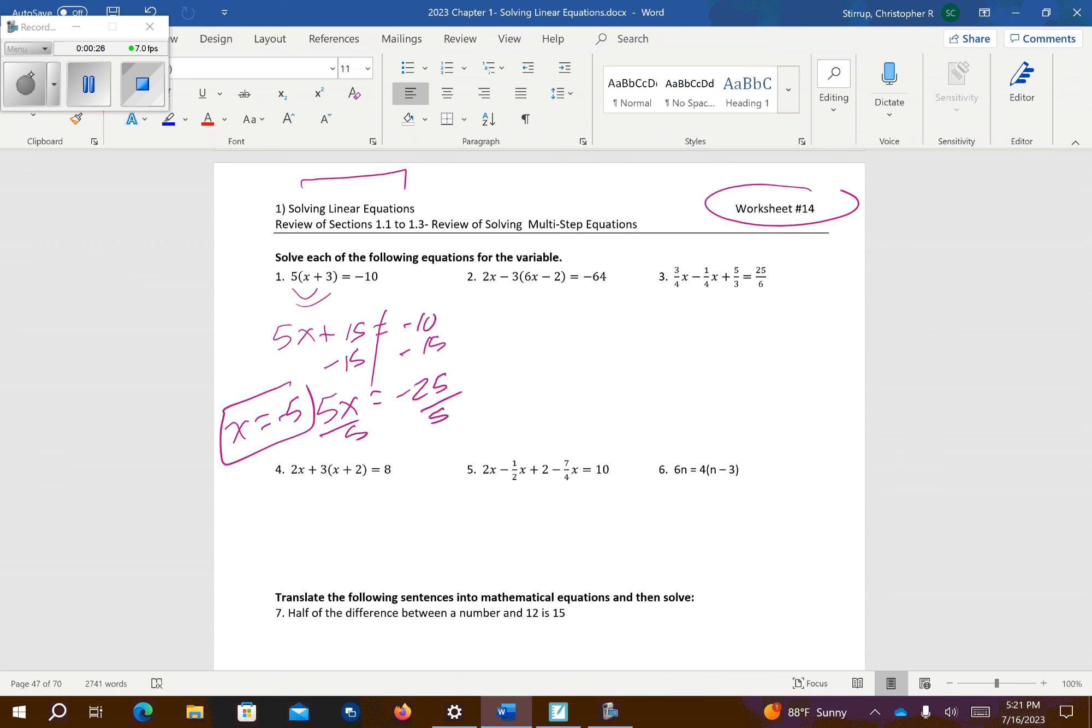Number 3. We have denominators of 4, 4, 3, and 6. The smallest number that 4, 4, 3, and 6 all go into would be 12. So I'm going to multiply everything by 12.